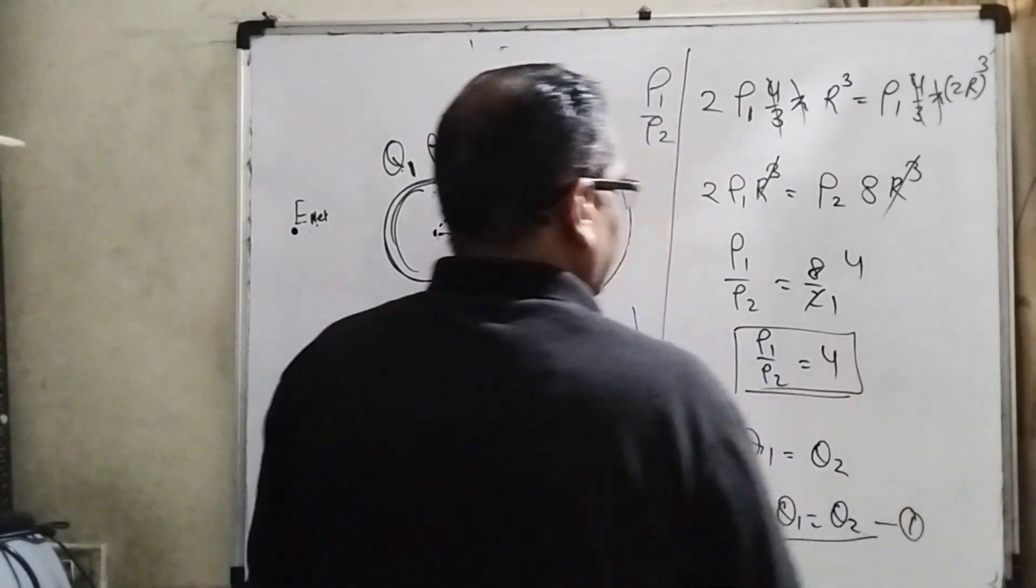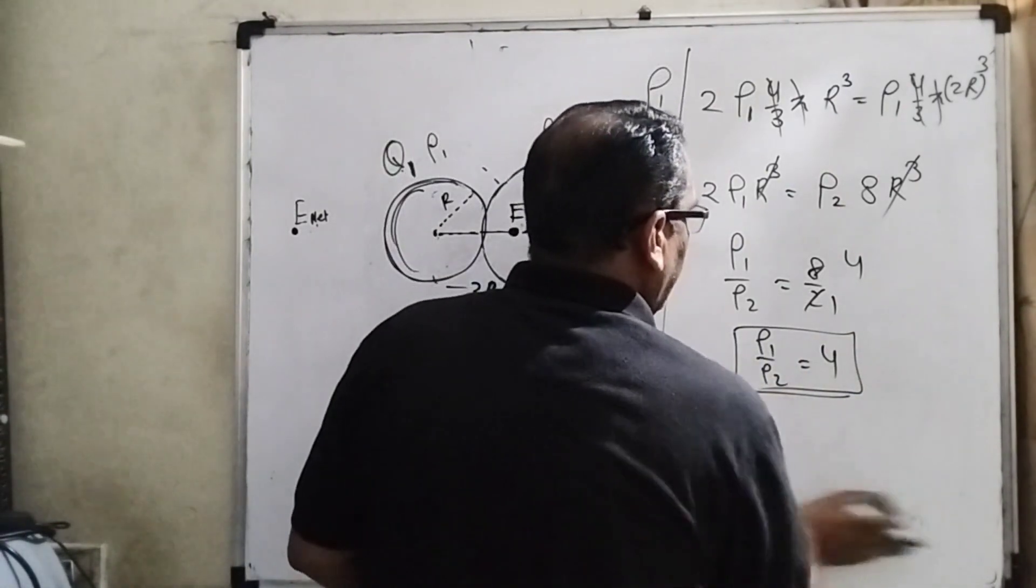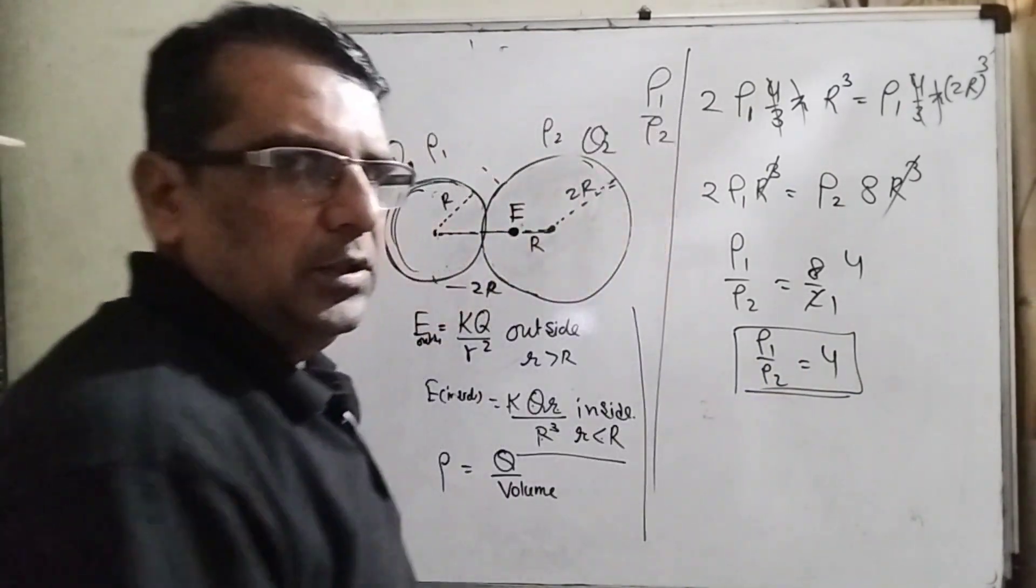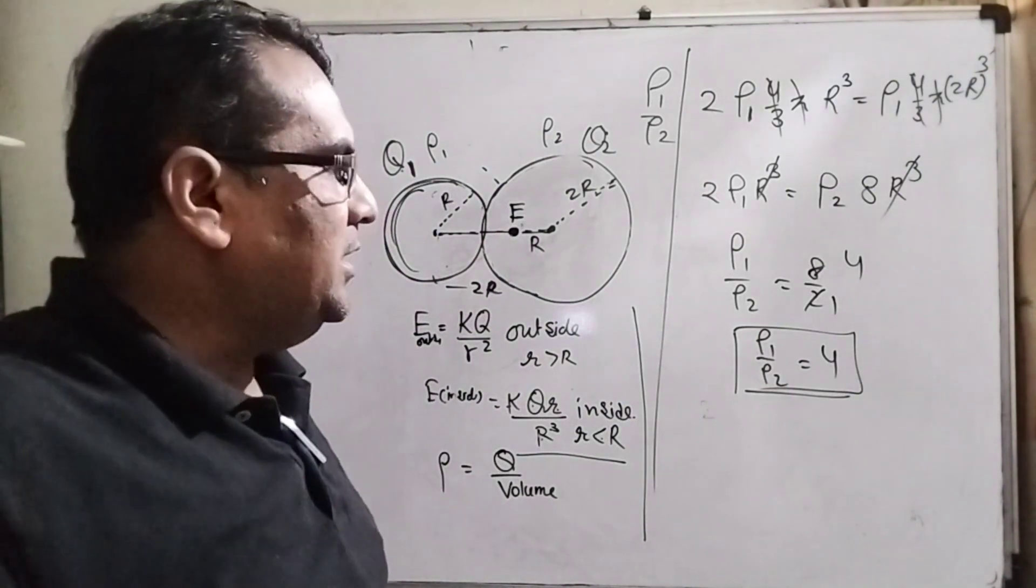So therefore, first option rho 1 and rho 2 equal to 4, that is the correct answer. Now we see second condition.